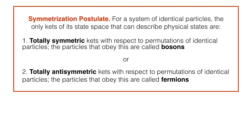The symmetrization postulate says that for a system of identical particles, the only kets of its state space that can describe physical states are the following: either totally symmetric kets with respect to permutations of identical particles — and the particles that obey these are called bosons — or totally antisymmetric kets with respect to permutations of identical particles — and the particles that obey these are called fermions.